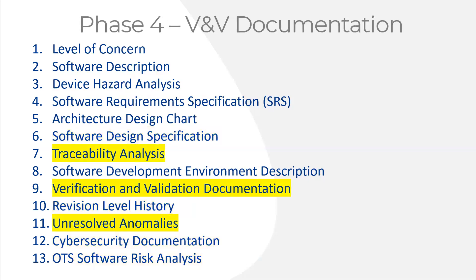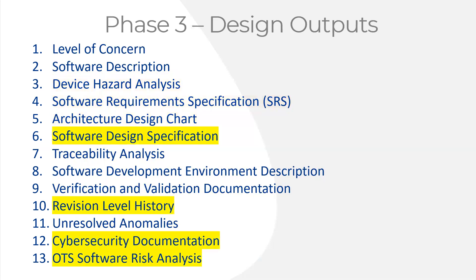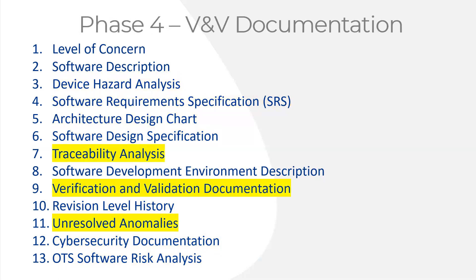Once you've reached the final version, you take all documentation from every unit test and integration test — both passed and failed — and summarize it in your verification and validation documentation. There will probably still be a few unresolved anomalies. For software, if it gives an error message or won't compile, that may be acceptable. But if it compiles and gives a wrong answer in a diagnostic software application, that's an unresolved anomaly that would not be acceptable for release. The FDA also wants a traceability analysis linking all the way back through design inputs — hazard analysis, SRS, and architecture design chart — through design outputs including software design specification and risk analysis — to the verification and validation reports for unit tests, integration tests, and final system validation.